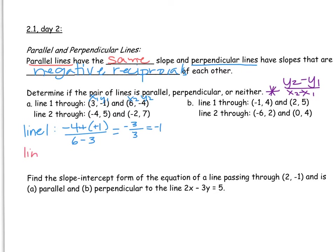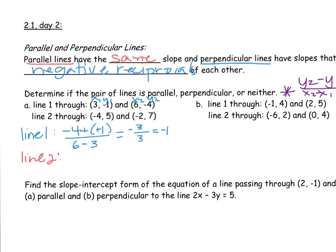Let's take a look at line 2. We'll do the same thing with x1, y1, and x2, y2. Again, we're defining slope. In this case, we have y2 minus y1, which is 7 minus 5, over x2 minus x1, negative 2 minus negative 4. We have that double negative. 7 minus 5 is 2. Negative 2 plus 4 is positive 2, and that's a slope of 1.